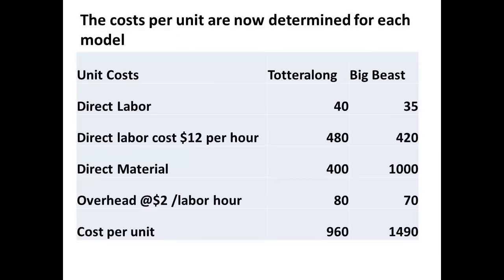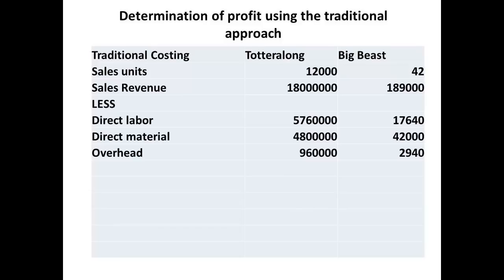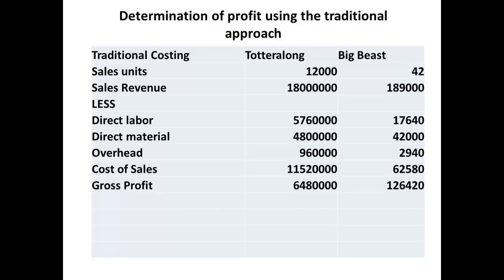The remainder of the information was already available, with unit costs for direct labour at $12 per hour and costs for direct materials known. This gave a unit cost of $960 for the totter-along moped and a unit cost of $1,490 for the big beast luxury bike. Profit was determined using the traditional costing method for allocation of fixed overhead. The last trading period showed that 12,000 mopeds had been sold, but only 42 of the luxury bike. Sales revenue is recorded, and the direct labour, materials and overhead are entered using the information on unit costs and the number of units sold. We can add the costs for direct labour, materials and overhead to determine cost of sales, then subtract this figure from sales revenue to give the gross profit for each model.